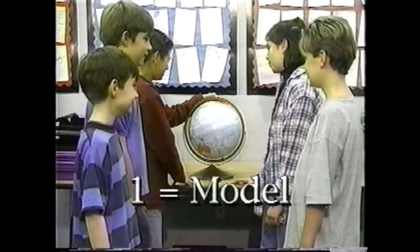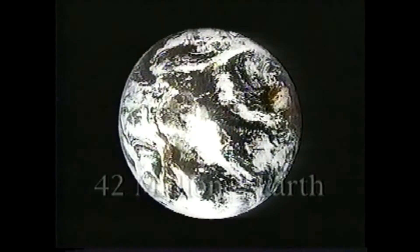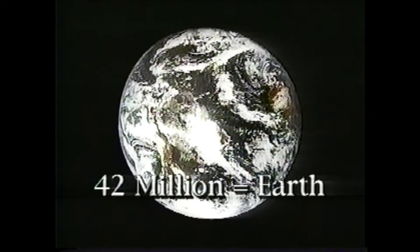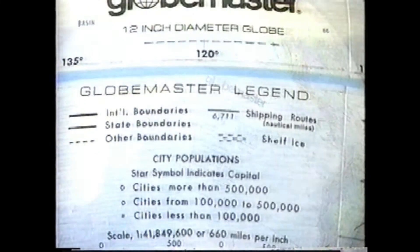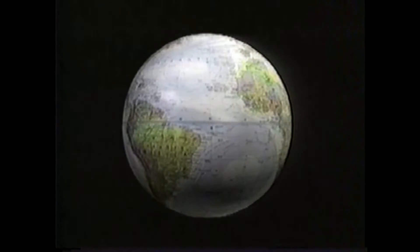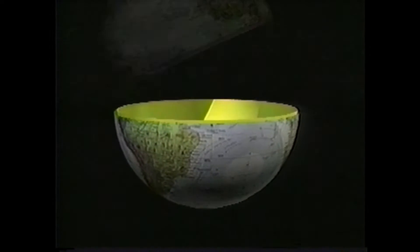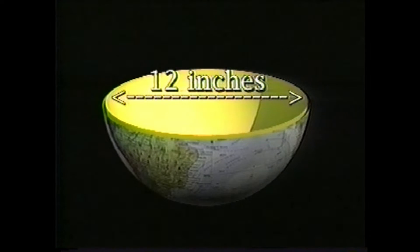The 1 represents the model, in this case the globe. The 42 million represents the real thing, Earth. Looking at the legend, we can see that this globe has a diameter of 12 inches. That means if you cut this globe in half and measured it right through the center, it would measure 12 inches, or 1 foot.